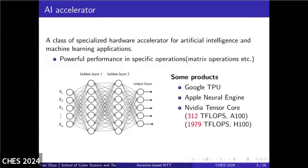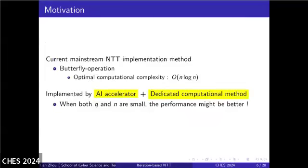This slide introduces the motivation behind our work. Currently, mainstream NTT implementations widely adopt butterfly operations as the method for acceleration, which provides theoretically optimal computational complexity. However, given the powerful capability of AI accelerators, we see an opportunity to design specialized implementation schemes aligned with their computation models. In scenarios where the algorithm's modular Q and polynomial degree N are relatively small, this approach could potentially yield even better performance.